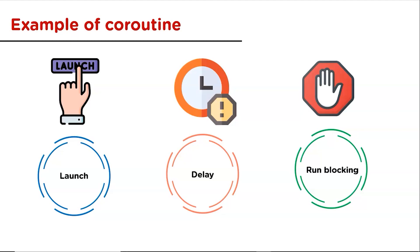Next is delay. Delay is a suspending function used to suspend a coroutine for a particular time and resume it after that time. It doesn't block the underlying thread but allows other coroutines to run and use the thread. It is also a cancelable function.